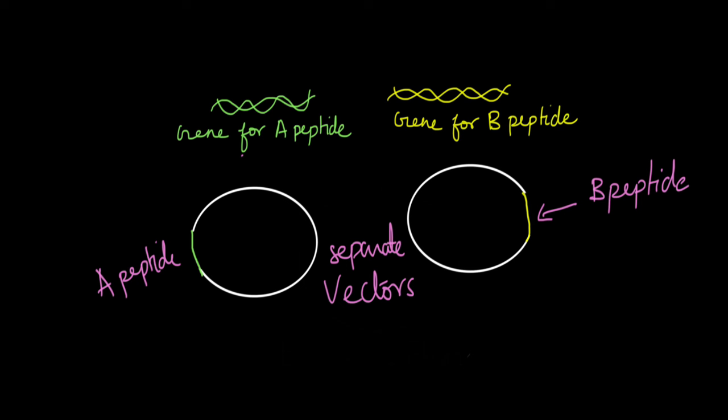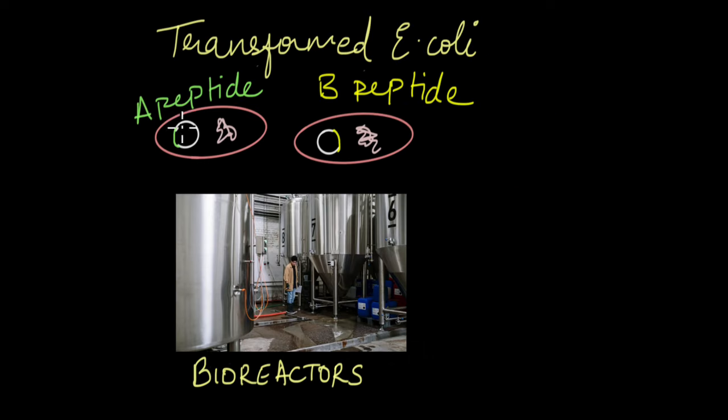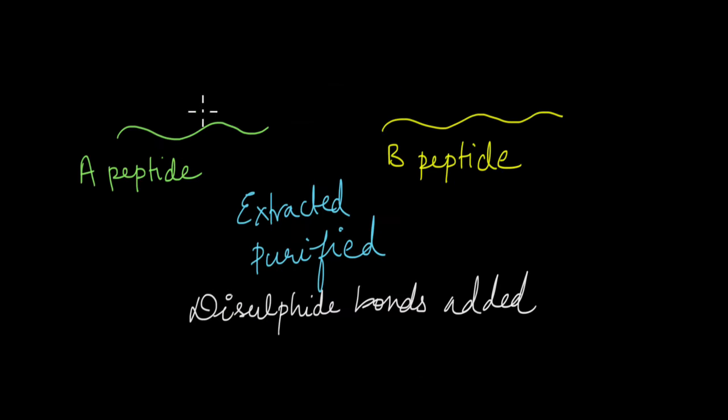They inserted these vectors back into E. coli. This is the E. coli with the A peptide sequence and this is the E. coli with the B peptide sequence. So these E. coli cells culture were grown in huge tanks, huge bioreactors and the genes were allowed to be expressed in these bioreactors. So from the bioreactors, the A peptide and the B peptide were separately extracted.